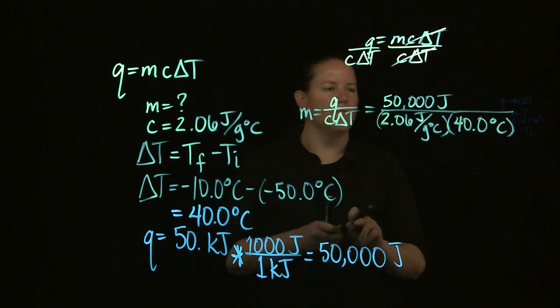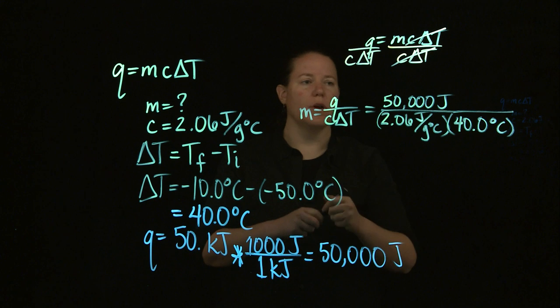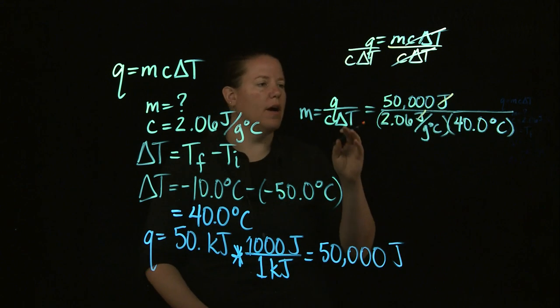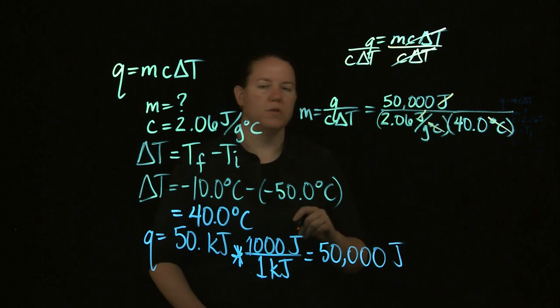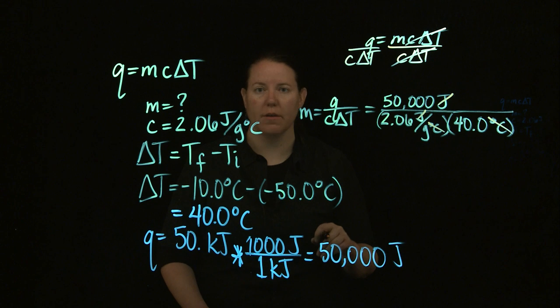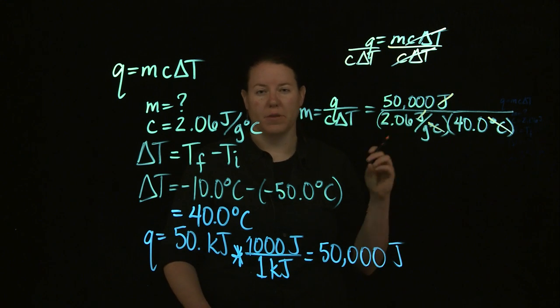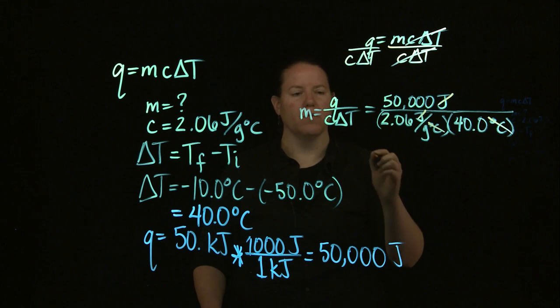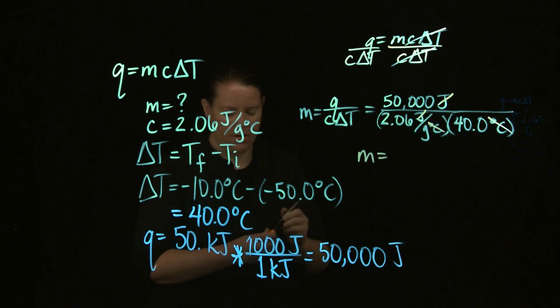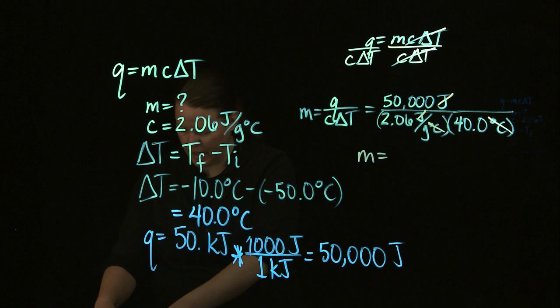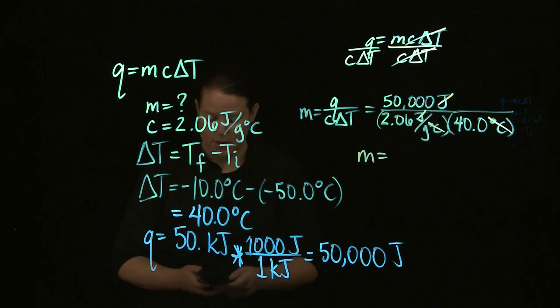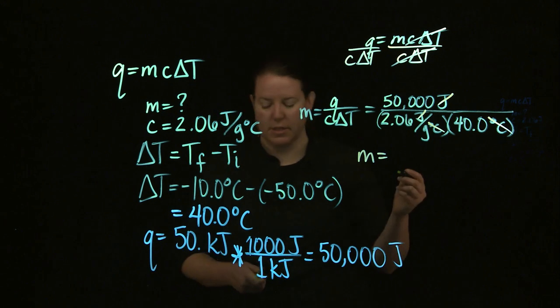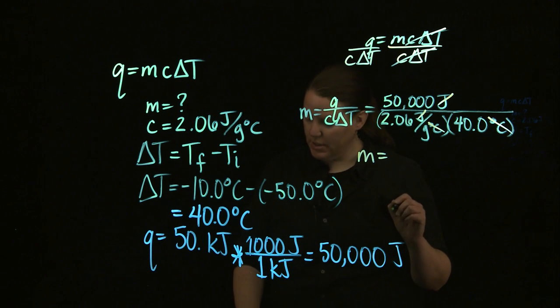And notice what happens. We have joules in the numerator and the denominator. They cancel out. We have degrees Celsius in the numerator and the denominator of the bottom, which means they cancel out. The only thing left is grams in the denominator of the denominator, which puts it in the numerator. It's a little confusing. Just believe me that it works out. And I'm going to put that into my handy dandy calculator. 50,000 divided by 2.06 divided by 40. Lo and behold, I get an answer. My answer is 606.796 grams.